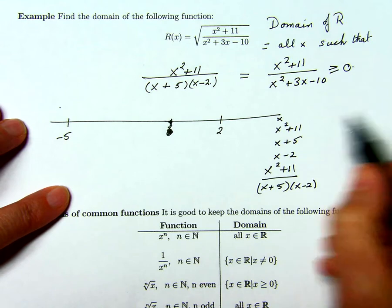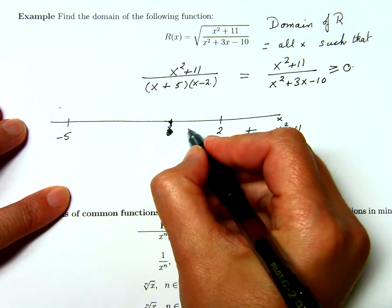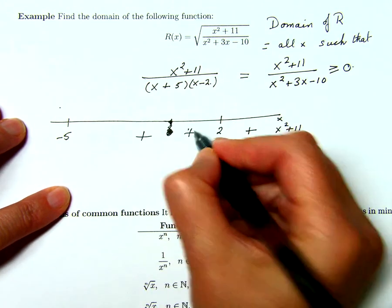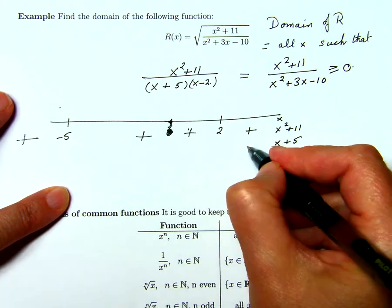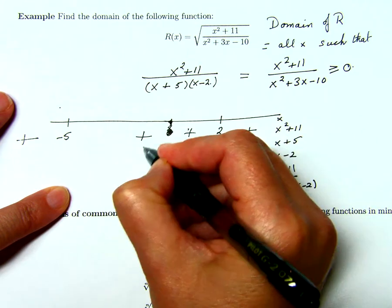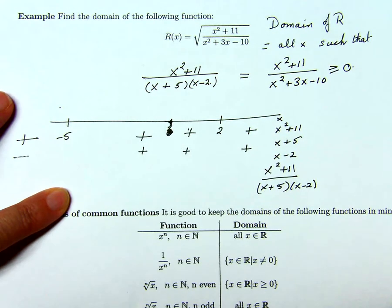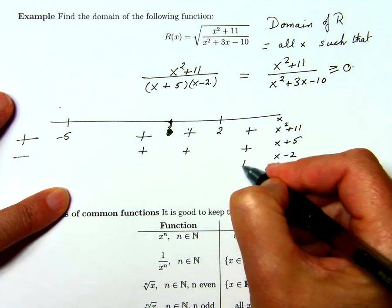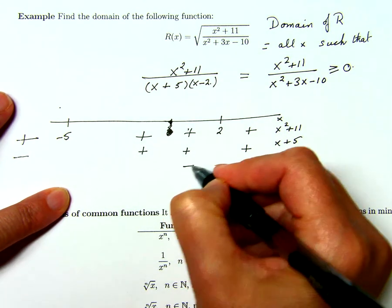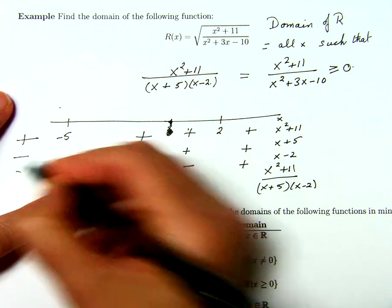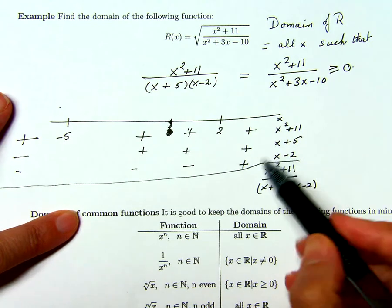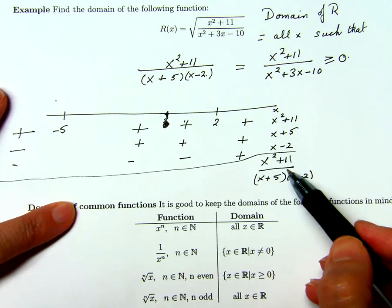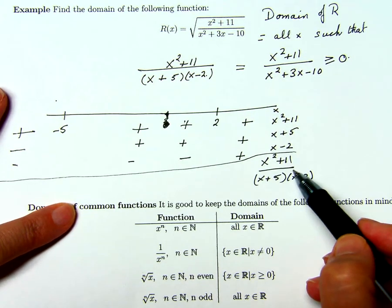And this one, this part, this factor is always positive, x plus 5 is positive to the right of negative 5, but then negative to the left of that, and x minus 2 is positive to the right of 2, but then negative to the left of that. And now, the quotient that we're looking at is an algebraic combination of these factors using multiplication and division.